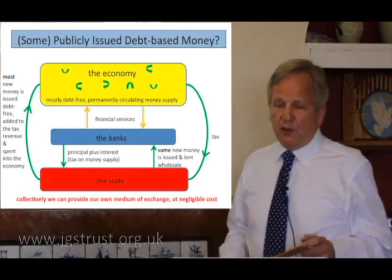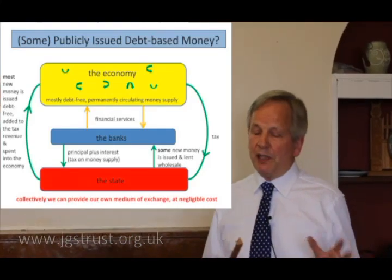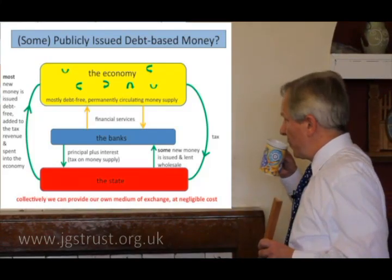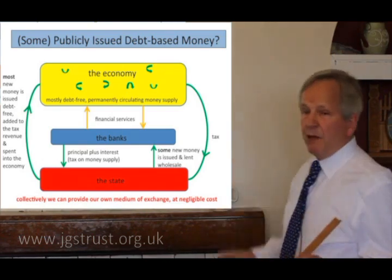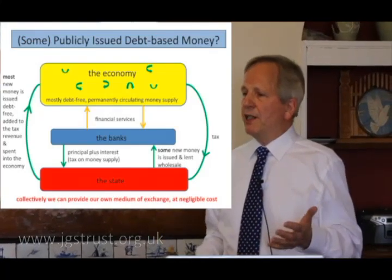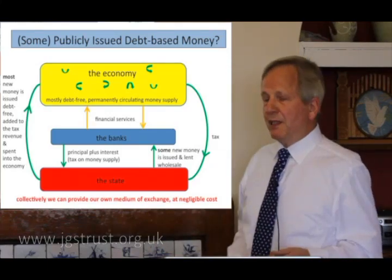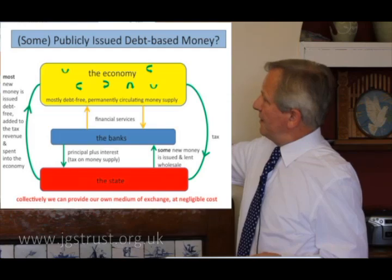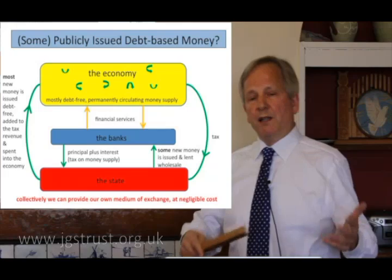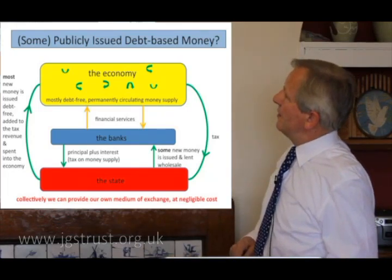Let's not knock debt-based money per se — we're just knocking commercially issued debt-based money. There is an argument that any money system needs to be a bit flexible, needs to expand and contract. If somebody invents a new widget and suddenly lots of factories are needed, we need a bit more money in the economy. We can still do that: collectively, through the state, we can lend money into the economy, as well as spend money into the economy. So it's not a problem. This is a counter-argument to...